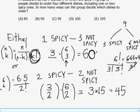So in total then, we've got 60 ways in which we're ordering one spicy and three not spicy dishes, and also 45 ways in which we ordered two spicy and two non-spicy dishes, and 60 plus 45 is equal to 105.